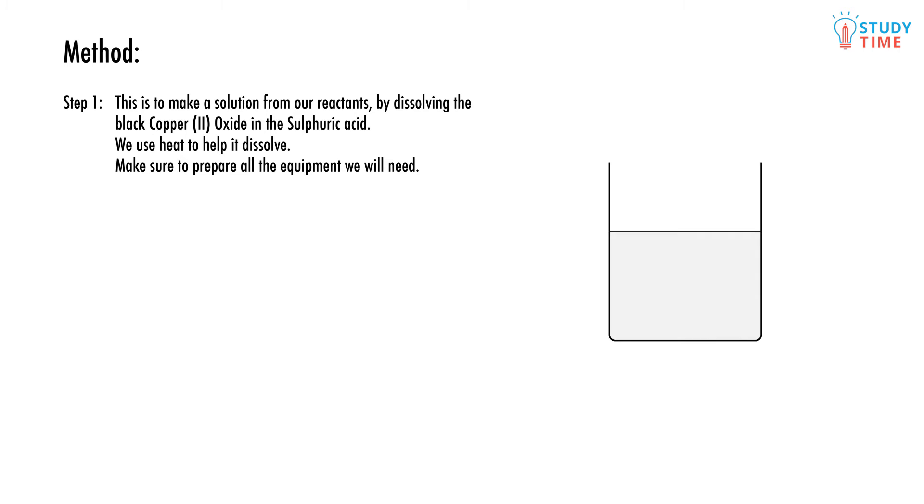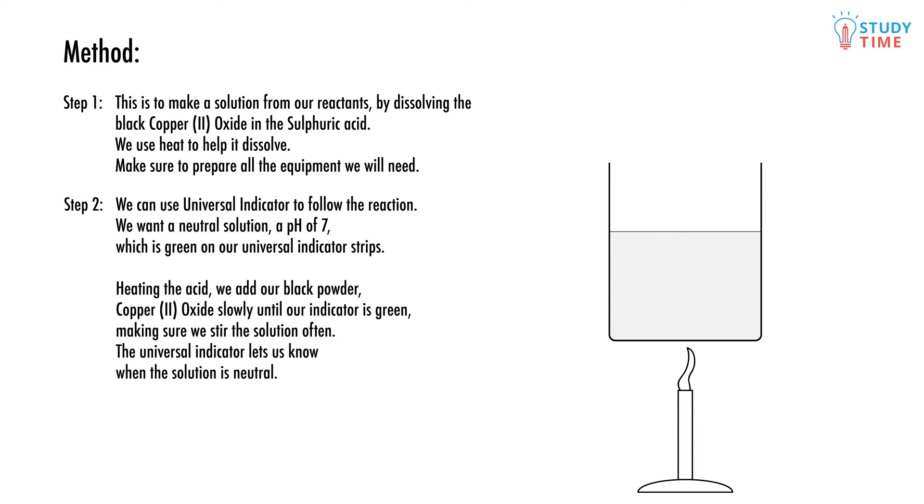Step one: this is to make a solution from our reactants. In this case, we dissolve the black copper (II) oxide in the sulfuric acid. This isn't always easy, so sometimes we use heat to help it dissolve. Make sure to prepare all the equipment we need.